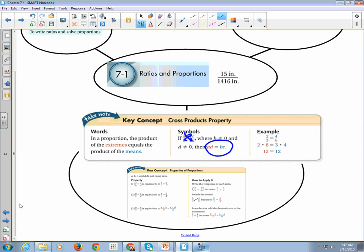So we get AD equals BC. For example, 2/3 equals 4/6. So when I multiply 2 times 6 and then I multiply 3 times 4, I'll just stop so you guys can see it. And I get 2 times 6 equals 3 times 4. That is 12 equals 12.